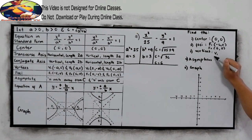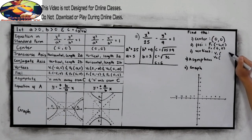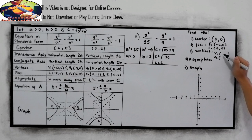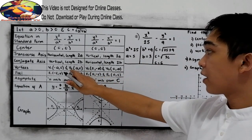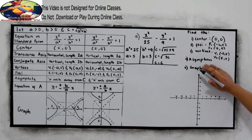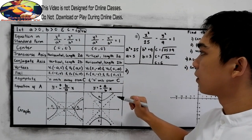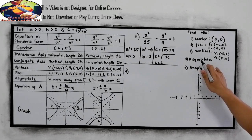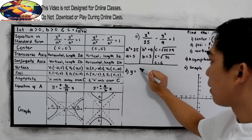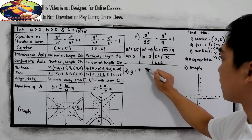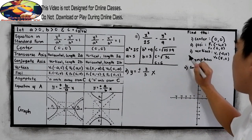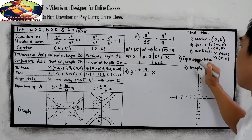For the vertices: vertex sub 1 follows (−A, 0), so with A = 5, V sub 1 is (−5, 0). For vertex sub 2, (A, 0), so V sub 2 is (5, 0). Now for the asymptotes — the equation of the asymptote is y = ±(B/A)x, so y = ±(3/5)x. That is our equation of the asymptote.